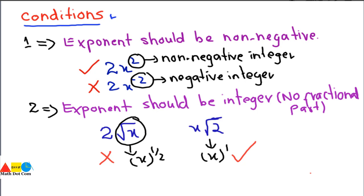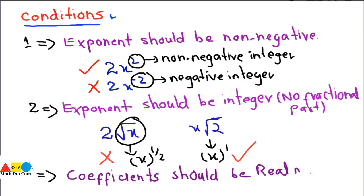The last condition required for the polynomial is that coefficients should be real numbers. These are the three conditions required to identify whether an algebraic expression is a polynomial. If all three conditions are matched, the expression is a polynomial. For example, 2x² + 3y: the coefficients 2 and 3 are real numbers.